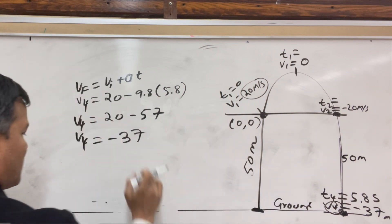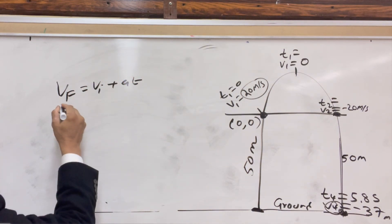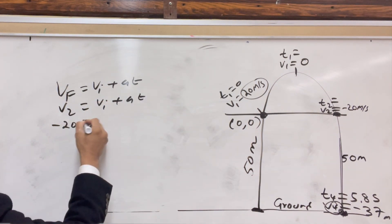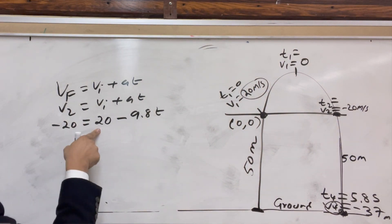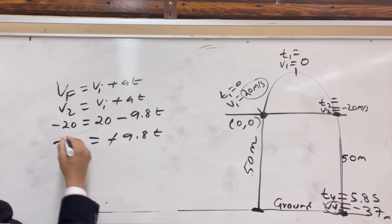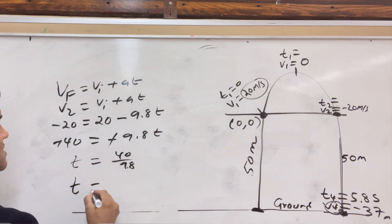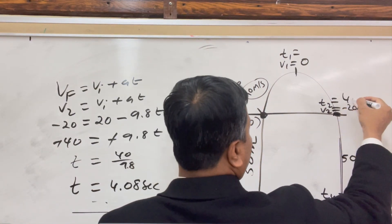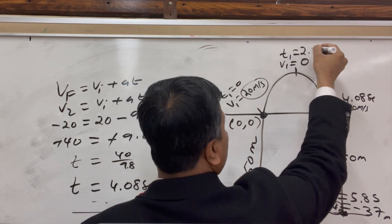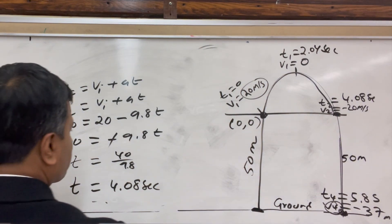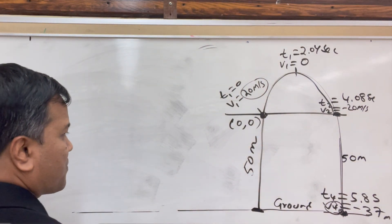Now we need T2. Using V_f = V_i + at: V2 = −20, V_i = 20, so −20 = 20 − 9.8t. This gives −40 = −9.8t, so t = 40/9.8 ≈ 4.08 seconds. Since this is a parabola and therefore symmetric, T2 is half of 4.08, which is 2.04 seconds. Now we know every single point. You can put these values into the boxes. That was problem number 3.